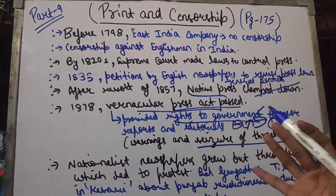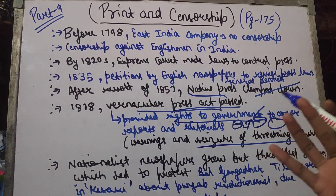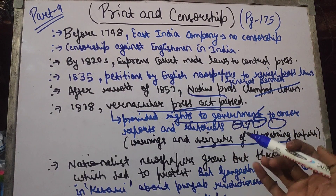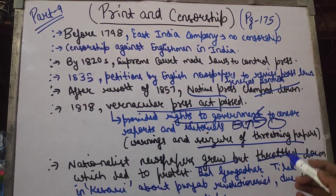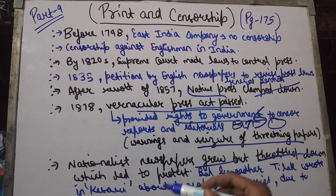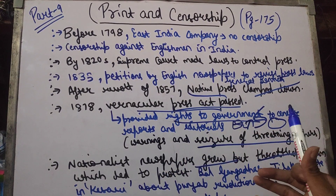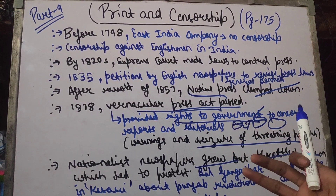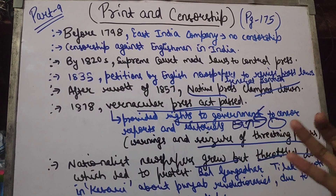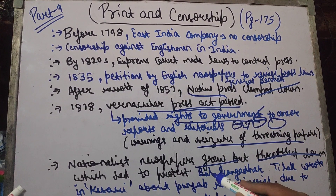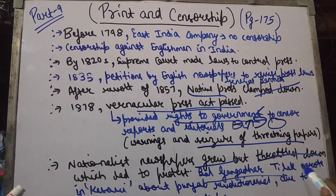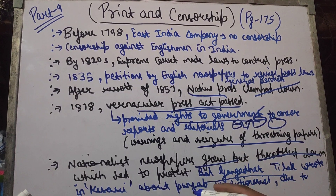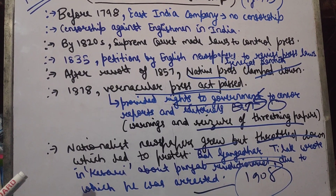Next, we can talk about national newspapers. In addition to national newspapers, Indian supporting newspapers were coming up, but as they came forward, they were throttled down and slowed. People were talking about our nation and they were stopped. People protested — why are they doing this? Many big people came and wrote about the Punjab revolutionaries, and they were arrested in 1908.